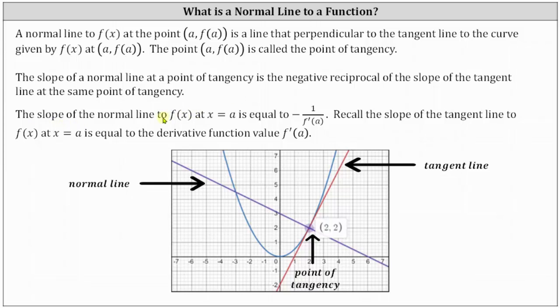The slope of the normal line to f(x) at x = a is equal to negative one divided by f'(a). Recall the slope of the tangent line to f(x) at x = a is equal to the derivative function value f'(a).